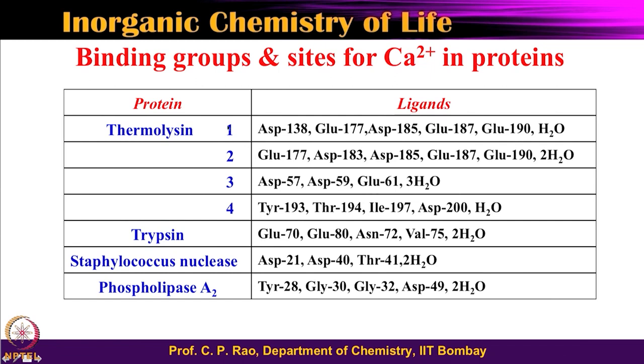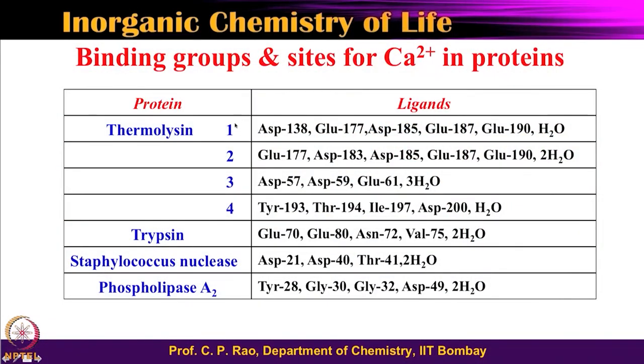Now let us look at a few calcium proteins and examine how calcium 2+ is bound. Here is a table showing crystal structures of different calcium-binding proteins. Sites 1, 2, 3, and 4 refer to calcium site 1, site 2, site 3, and site 4. If you examine this, you see aspartic, glutamic, aspartic, glutamic, water — aspartic, glutamic, water, aspartic, glutamic, like that.